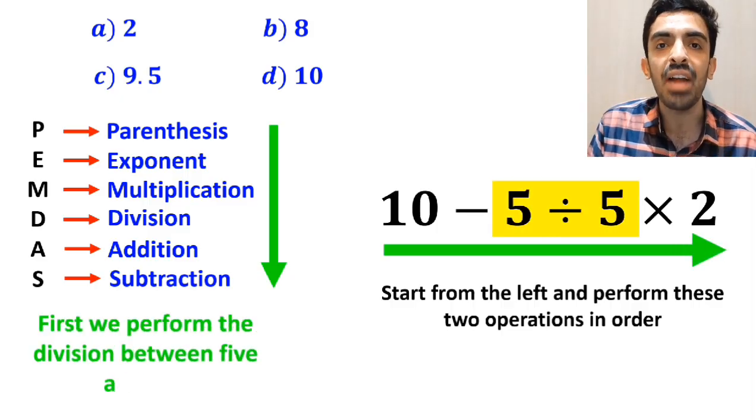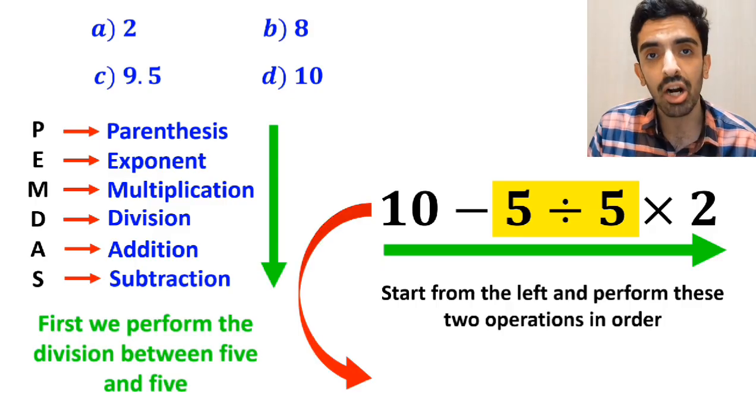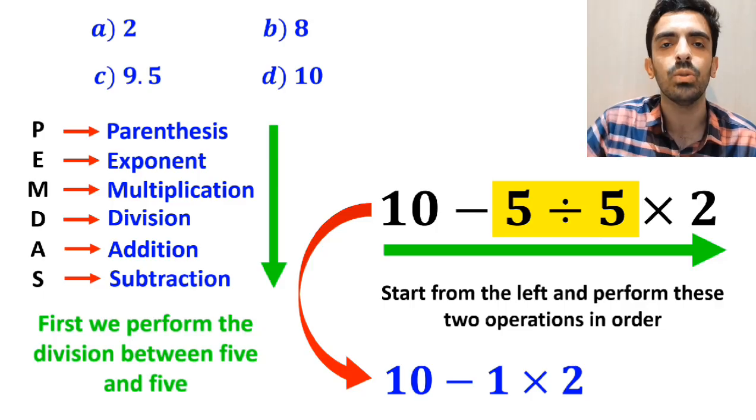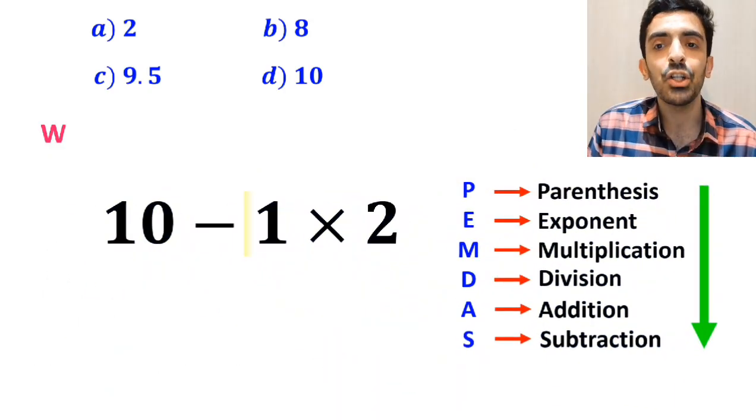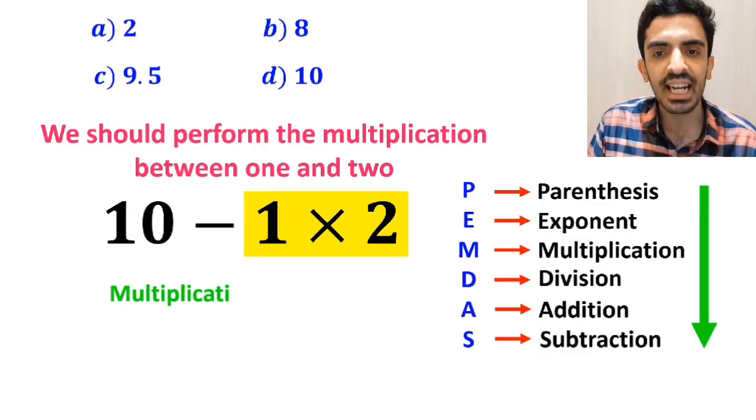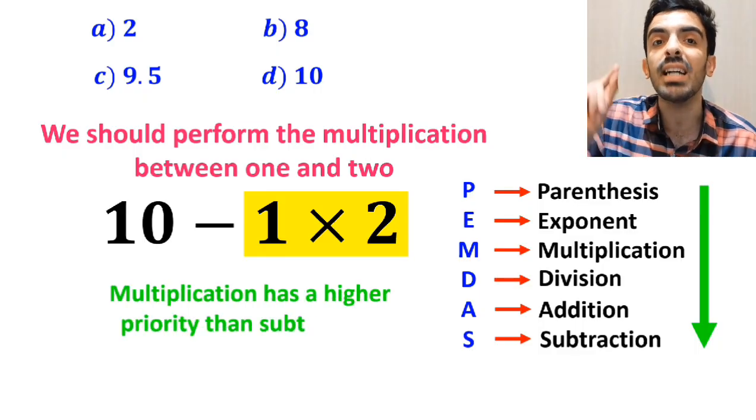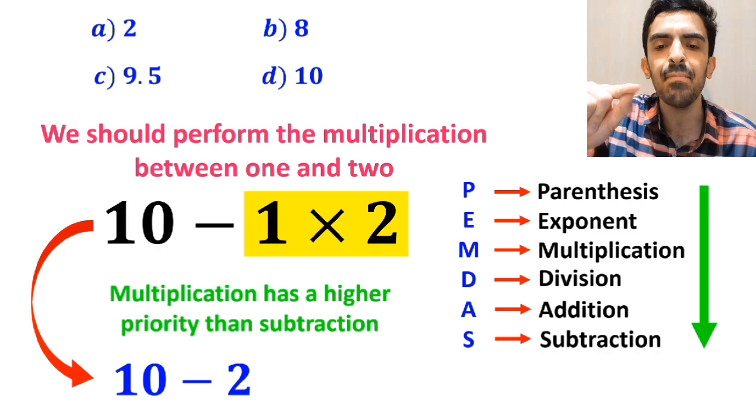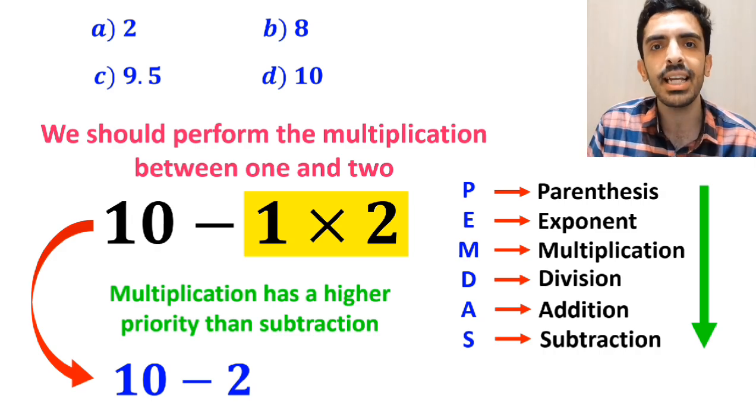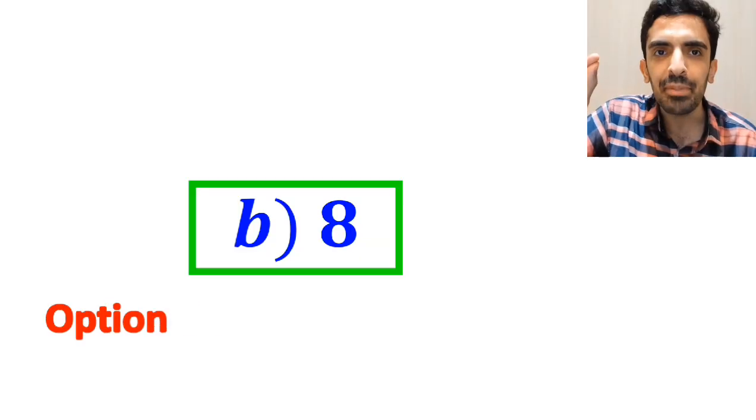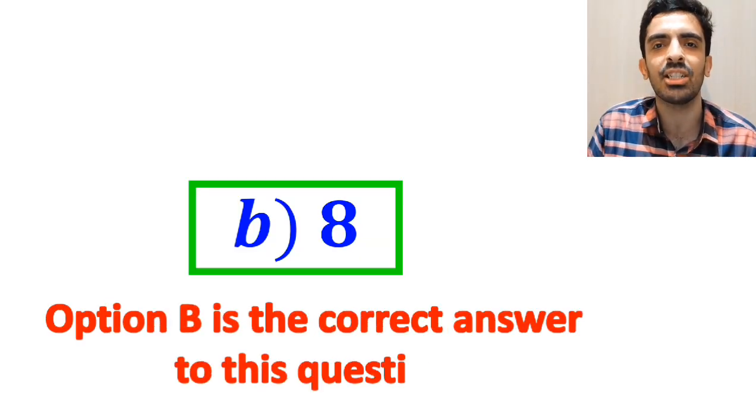So first we perform the division between 5 and 5, and instead of the original expression, we can write 10 minus 1, then times 2. And in the next step, we should perform the multiplication between 1 and 2, because multiplication has a higher priority than subtraction. So this expression simplifies to 10 minus 2, and finally, we get the answer 8. Therefore, option B is the correct answer to this question.